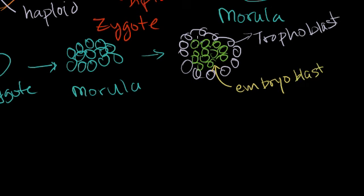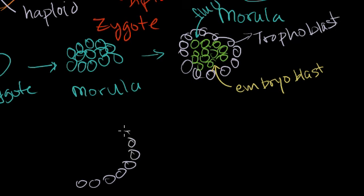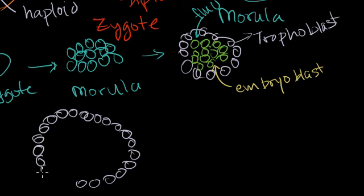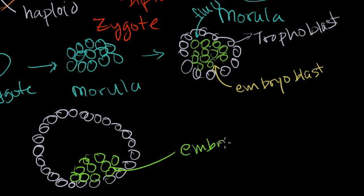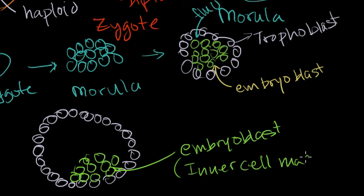What's going to happen is some fluid starts filling in the gap between the embryoblast and the trophoblasts. The morula will eventually look like a huge sphere of cells — the trophoblasts on the outside — as they keep replicating via mitosis. The embryoblasts, sometimes also called the inner cell mass, sits inside.